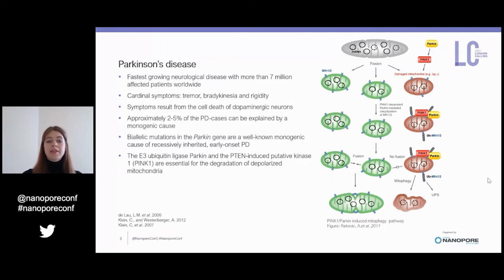Beside other risk factors, approximately two to five percent of PD cases can be explained by a monogenic cause. For example, biallelic mutations in the Parkin gene — so homozygous and compound heterozygous mutations — are a well-known monogenic cause of recessively inherited early-onset Parkinson's disease.